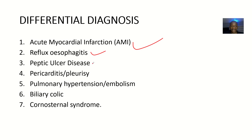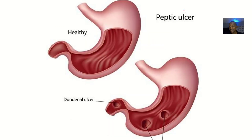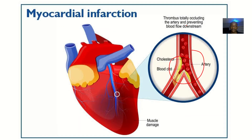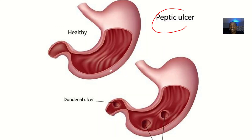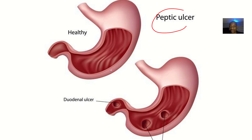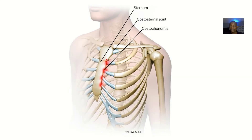Then we have peptic ulcer disease. It could also be pericarditis — sorry, that's inflammation of the pericardium; I didn't bring the picture — inflammation of the pericardium. It could also be pulmonary hypertension, or biliary colic.